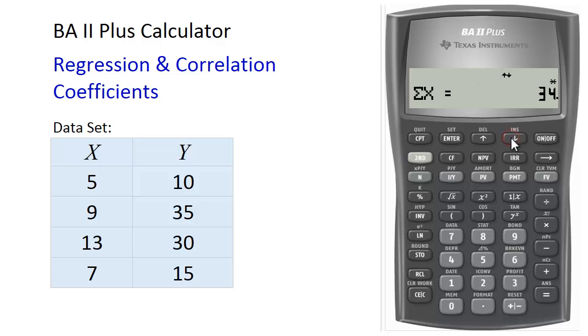And if you scroll down further here, it shows you the sum of X values that we put in, the sum of squared X values, sum of Y, sum of Y squared, sum of XY. And that's all the statistics displayed by the BA II Plus calculator.